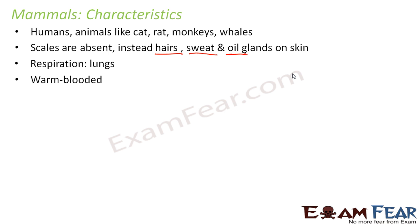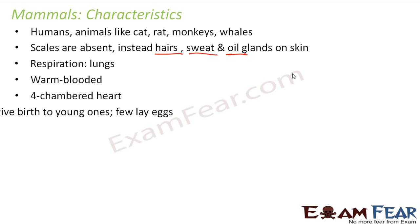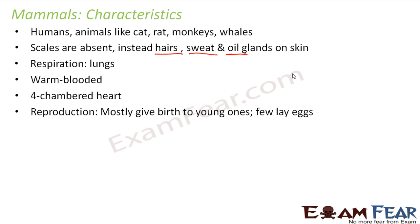Respiration happens through lungs. Mammals are warm-blooded — they try to maintain their internal body temperature constant. They have a four-chambered heart. How do they reproduce? They mostly give birth to young ones, and very few of them lay eggs. So mostly they do not lay eggs and give birth directly to young ones — for example, in human beings, when a mother gives birth to her baby, it is a small human being, not an egg. So mostly in the case of mammals, they reproduce by giving birth to young ones.